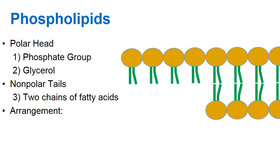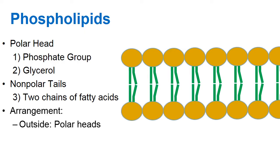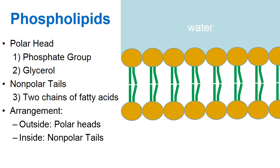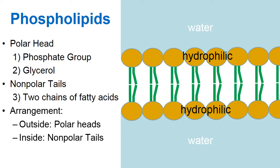The cell membrane is a phospholipid bilayer — two layers of phospholipids. The polar heads tend to be on the outside, and the nonpolar tails are sandwiched on the inside. This is because cells are surrounded by water on both sides: outside the cell, cells are in a watery solution, and inside the cell, the cytoplasm is mostly water. Water is polar and the heads of the phospholipids are polar, so they're attracted to one another. That's why the phospholipids orient themselves with the hydrophilic heads facing the watery environment and the hydrophobic tails on the inside.